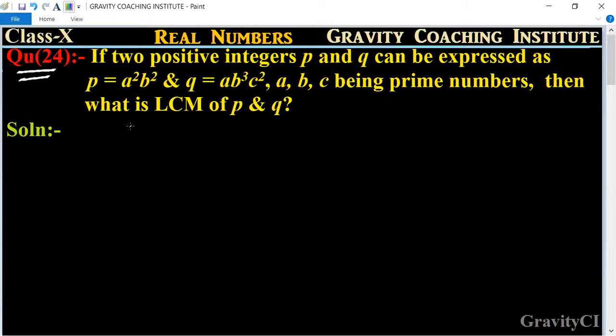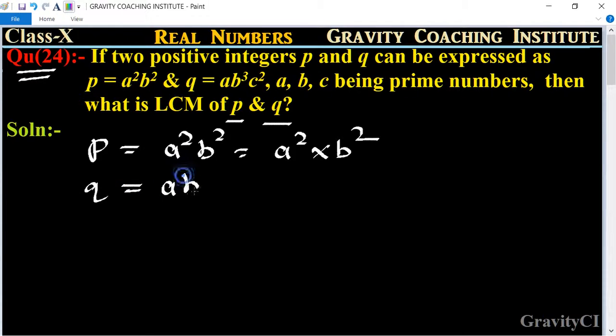So here p is equal to a square b square, so we can write a square into b square. And q is equal to a b q c square, so is equal to a into b q into c square.